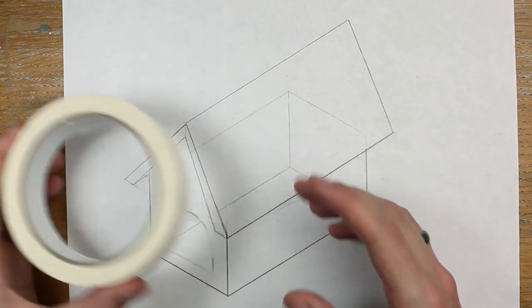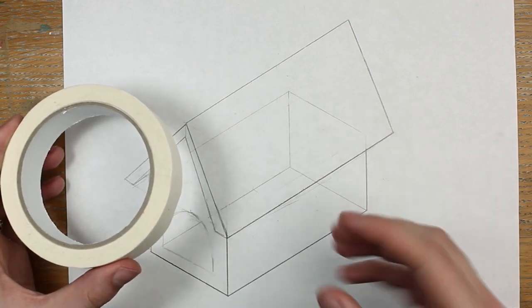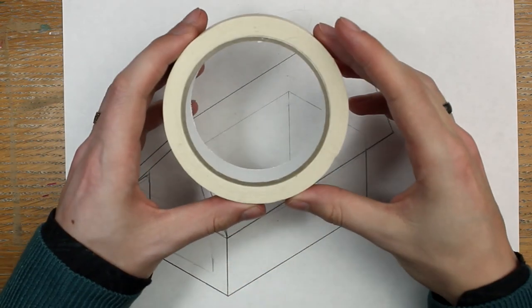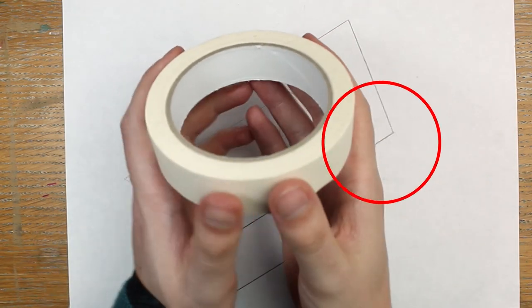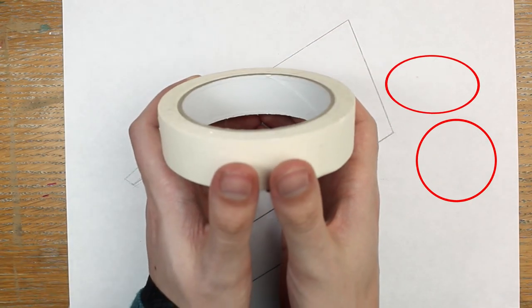Circles are one of the hardest parts about crating, because in isometric drawing, we're looking at everything from an angle. And when we look at circles from an angle, they become ellipses, or squished circles.